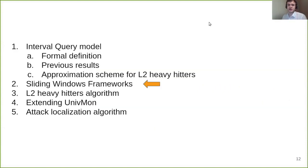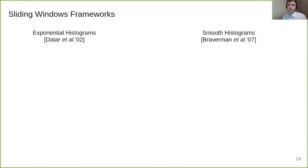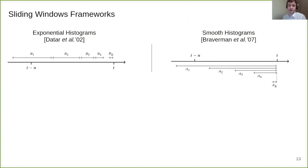We now move to the discussion of sliding window framework. Sliding window frameworks are used to extend existing streaming solution to the sliding window model. Two foundational sliding window frameworks are currently available: Exponential histograms by Datar in 2002 and smooth histograms by Braverman in 2007. Exponential histogram breaks interval T minus N to T into K buckets of exponentially growing size. At every step, new bucket appears and some buckets are getting pruned.